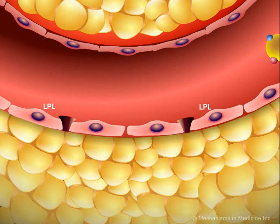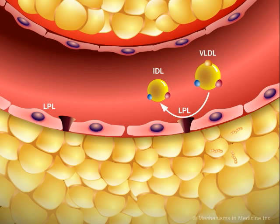In blood vessels, the enzyme lipoprotein lipase, LPL, hydrolyzes the triglycerides of VLDL. The products of this are primarily monoglycerides and free fatty acids. Lipoprotein lipase converts a VLDL particle into a VLDL remnant particle, called an intermediate-density lipoprotein, IDL.